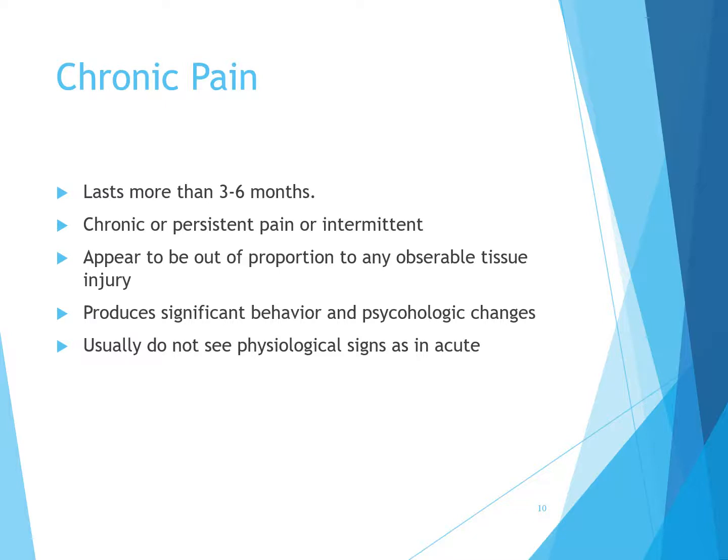Chronic pain lasts more than three to six months; it is chronic or persistent pain that can be intermittent. It appears out of proportion to any observable tissue injury and produces significant behavioral or psychological changes. Unlike acute pain, we usually do not see physiological signs. Patients may show depression, difficulty eating and sleeping, preoccupation with pain, and a tendency to hide their distress to avoid being labeled as complainers.